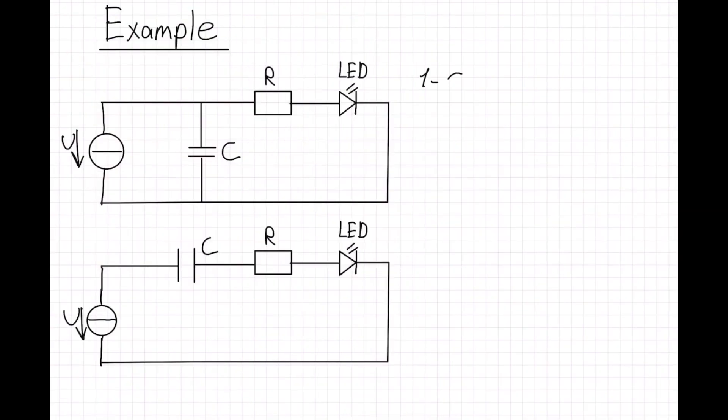So we have two example projects. First, our capacitor is in parallel and second one, we have a capacitor in series. At the first stage of our parallel circuit, our capacitor is discharged. So we charge our capacitor and also LED turns on.